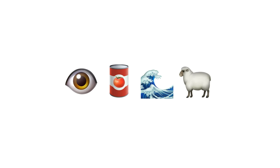Here is our example. First, we have an eye, a body part. Next, we have a can of soup or vegetables, so that's a can. We will interpret the picture of a wave as being a representation of an ocean, or more specifically, a sea. And finally, the sheep is a female sheep, and the specialized word for a female sheep in English is a ewe.